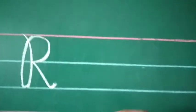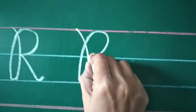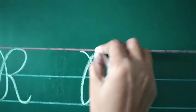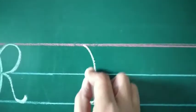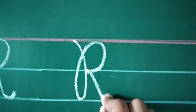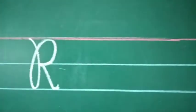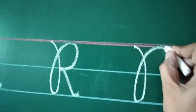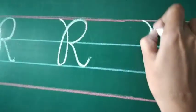Now next — start from here, do like this, and like this. This is letter R. Start from here, do like this, and like this. This is letter R. Start from here, take a turn, go to the red line, make a half circle, join, make a slant line and take a turn. This is letter R.